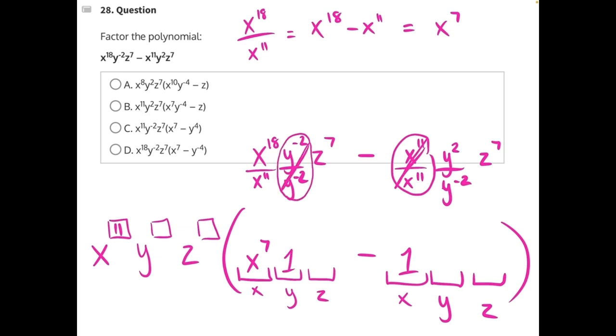And then with this one, we once again have two like bases being divided. So we're going to need to subtract their exponents. y to the 2 minus negative 2. Subtracting a negative is the same as adding a positive. That's the same as 2 plus 2, which will give us y to the 4. So what's left over here is y to the 4th. And what we've pulled out is a y to the negative 2.